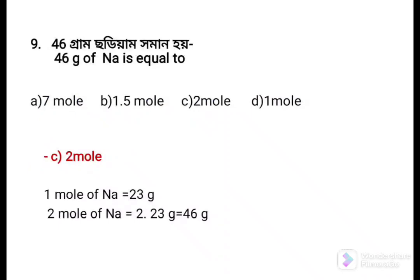Next question: 46 gram of sodium is equal to — Option a: 7 mol, Option b: 1.5 mol, Option c: 2 mol, Option d: 1 mol. The answer is Option c: 2 mol, because 1 mol of sodium = 23 gram, so 2 mol sodium = 2 × 23 gram = 46 gram.